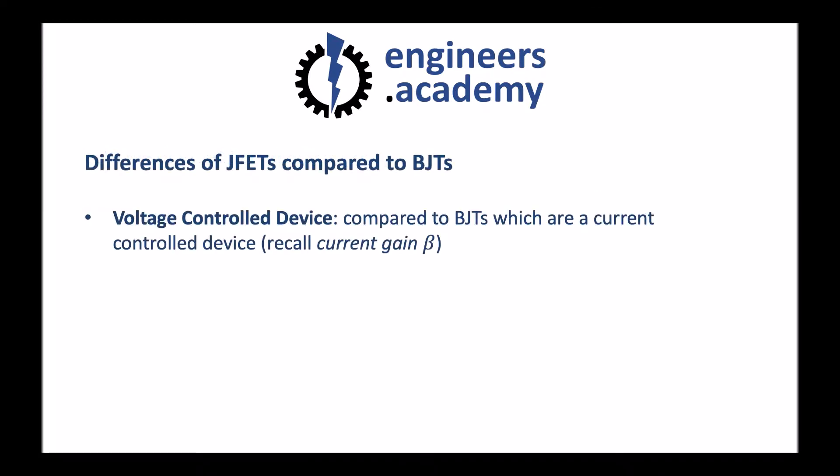One of the key differences of a J-FET compared to a bipolar junction transistor is that J-FETs are voltage controlled devices. Bipolar junction transistors are considered to be a current controlled device. We recall the current gain, beta, which we outlined in our previous video, and the fact that we can apply a small current to the base in order to draw a large current from the collector to the emitter.